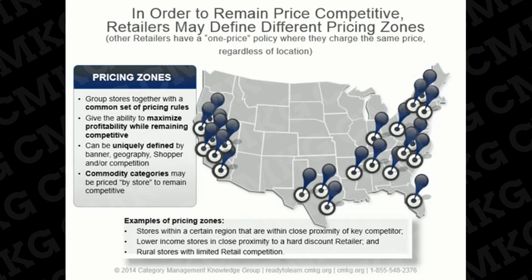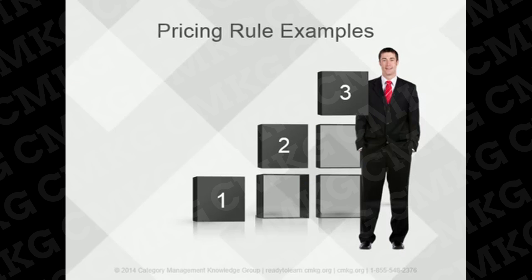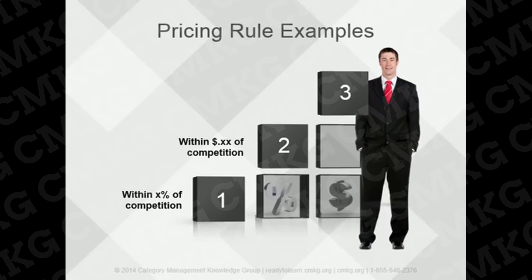Some retailers' strategy is to follow a one-price policy, where regardless of store location, they charge all customers the same price for an item. Retailers can also create pricing rules relative to competition that may be applied to specific items, sometimes within each of the pricing zones they've defined. An item may be priced within a certain percentage of competition, within a certain number of dollars and cents of competition, or the rule may focus on ensuring the lowest price among a certain set of competitors.